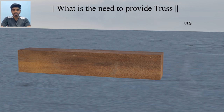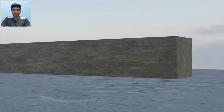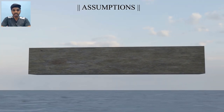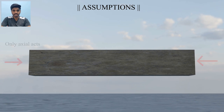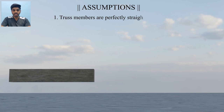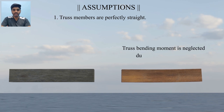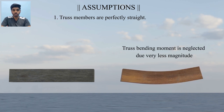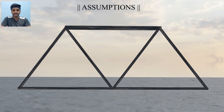There are a few assumptions we must consider when analyzing a truss structure. The first assumption is that all members of the truss are perfectly straight, meaning only axial force acts on each structural member. In practice, there may be slight imperfections causing some bending moment, but since its magnitude is very small, we neglect the bending moment during analysis. Hence, we assume that any truss member carries only axial force.